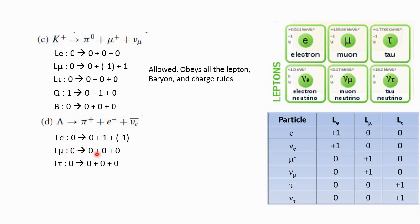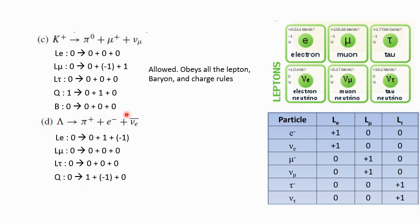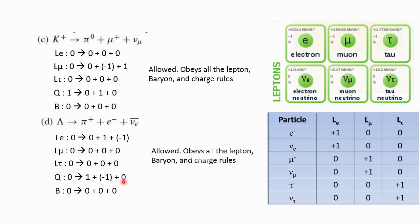There is no muon here, so everything must be zero. Tau is also zero. For charge: lambda neutral has zero charge; muon plus has positive one charge; electron has negative one charge; and anti-electron neutrino has zero charge. Adding it all up yields zero on both sides — charge is conserved. For baryon number, there is no baryon involved in this reaction, so baryon number is zero. The reaction is allowed because it obeys all the lepton, baryon, and charge rules.